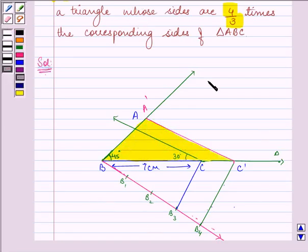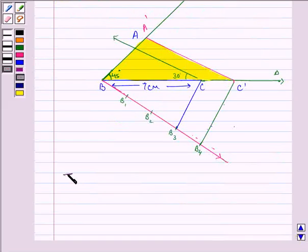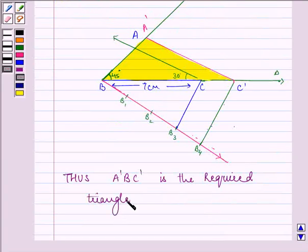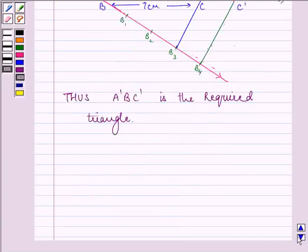So this A dash B C dash is the required triangle.